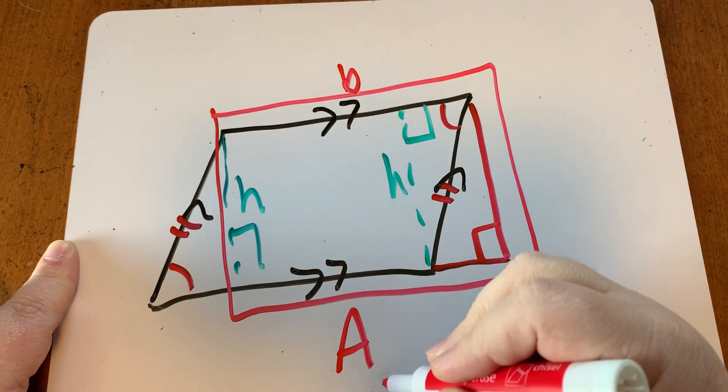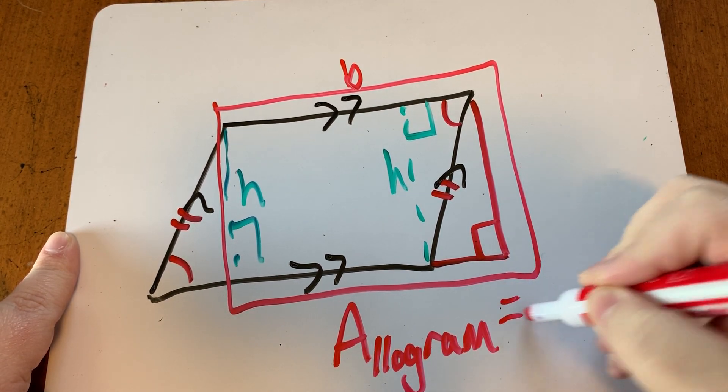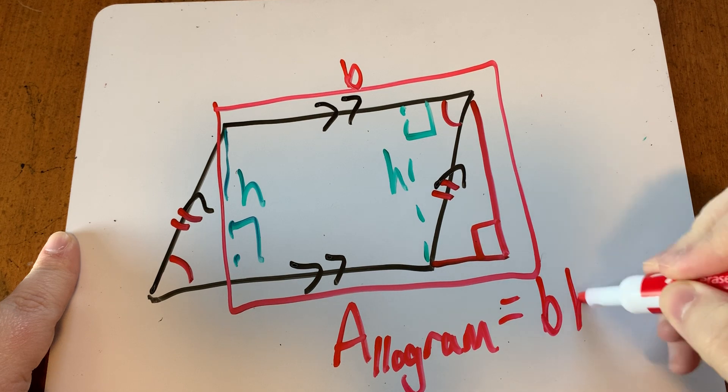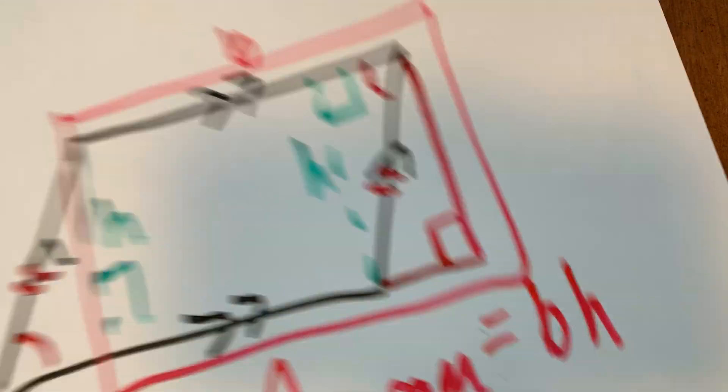That is the length of the base, that's the height. That base is the same as the length of these two parallel sides. So the area of a parallelogram is the same formula as the area of the rectangle: base times height. Except the height is not one of the sides of the parallelogram, unless it is a rectangle. So area of any parallelogram, you can use base times height.